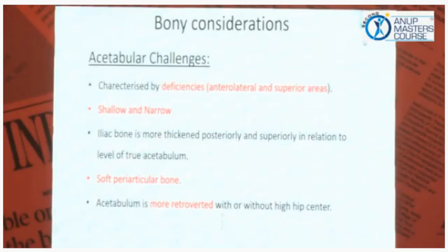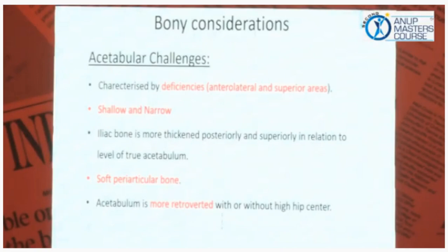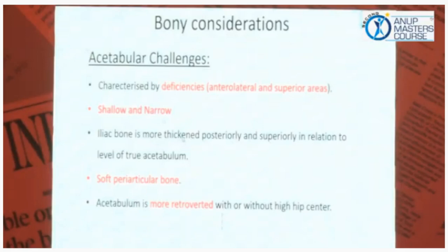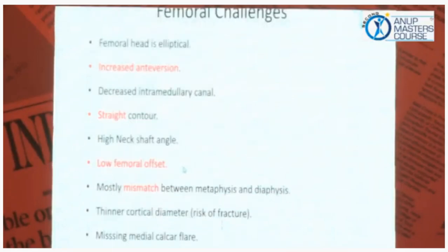Bony considerations: acetabular challenges are characterized by deficiencies, especially in the anterolateral and superior areas. The acetabulum is shallow and very narrow — be very careful to use a small shell and small head. The iliac bone is thickened posteriorly and superiorly in relation to the true acetabulum, which is a good sign. The periarticular bone is very soft — if you ream a little more, everything becomes loose. The acetabulum is more retroverted, with or without a high hip center.